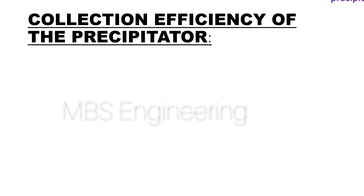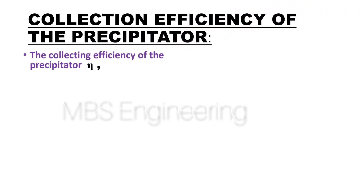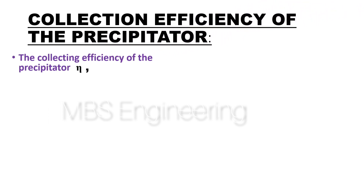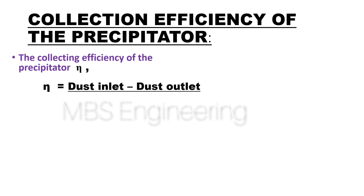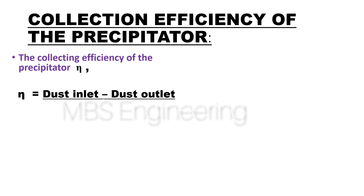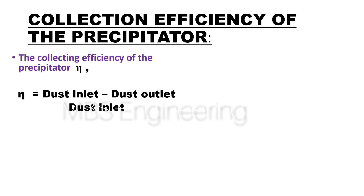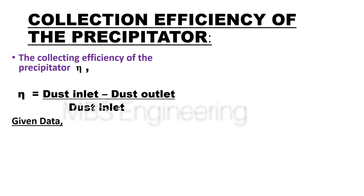Next, we are going to understand how to calculate the collection efficiency of the electrostatic precipitator, based on inlet and outlet dust concentration. The collection efficiency η is equal to inlet dust concentration minus outlet dust concentration, divided by inlet dust concentration.